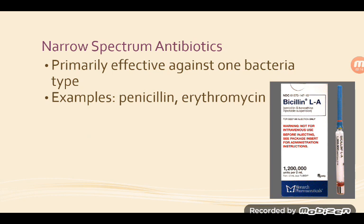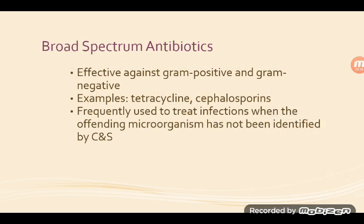Narrow-spectrum antibiotics are primarily effective against one bacteria — they're like shooting a dart at a dart board. They include penicillin and erythromycin. Broad-spectrum antibiotics are more like a shotgun; they're effective against gram-positive and gram-negative. Examples include tetracycline and cephalosporins, frequently used to treat infections when the offending microorganism has not been identified.